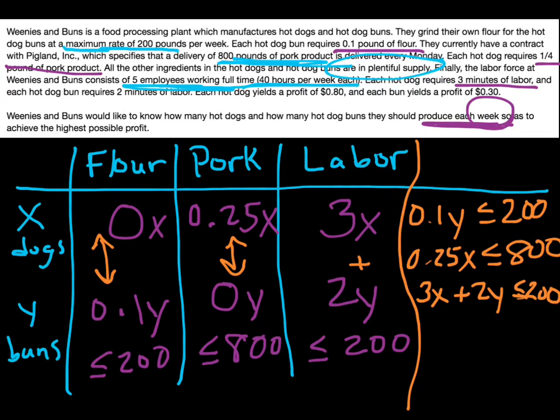Don't forget there are two other constraints to consider — the fact that the hot dogs and hot dog buns can't be produced in negative amounts. You can't have negative 3 hot dogs. Since all of our inequalities have been maximums, we didn't actually write anything yet that said the hot dogs and buns have to be positive numbers. So both x and y can only be positive numbers. Those are all of the constraints in this problem.